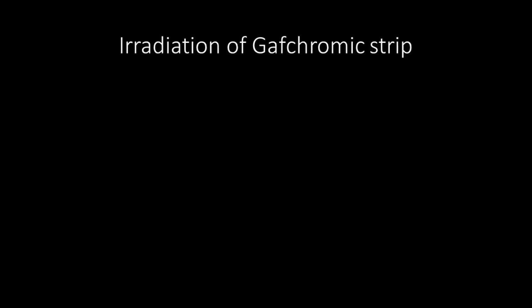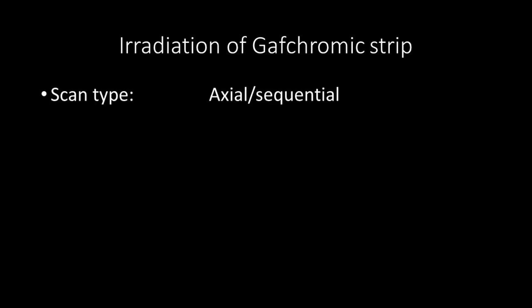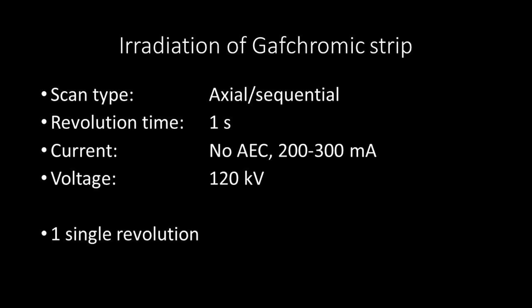The irradiation of the Gafchromic strip is similar to CTDI measurement: Axial or sequential scan type, tube revolution time of 1 second, manual current around 2 or 300 milliamp, tube voltage of 120 kilovolt. Irradiate over 1 single revolution.